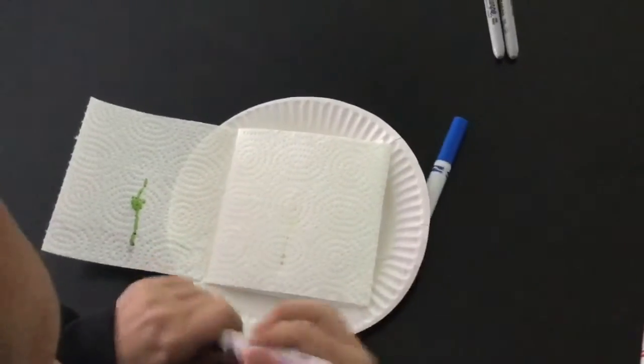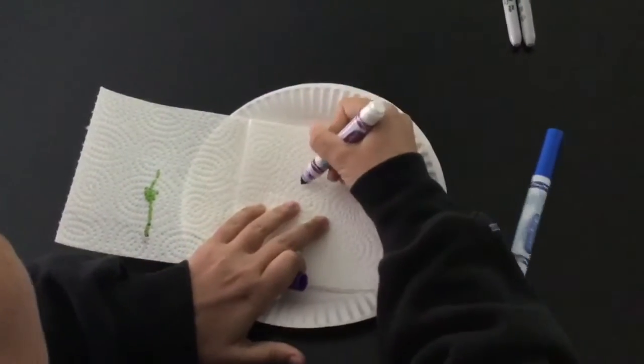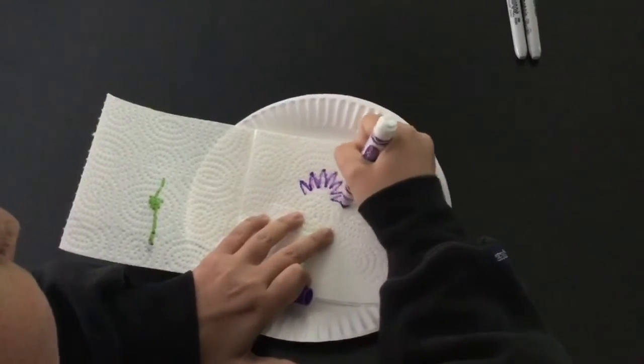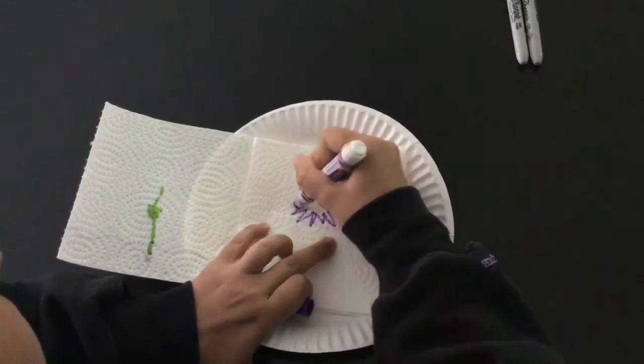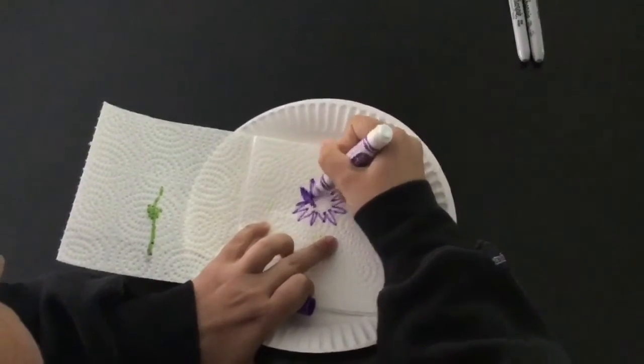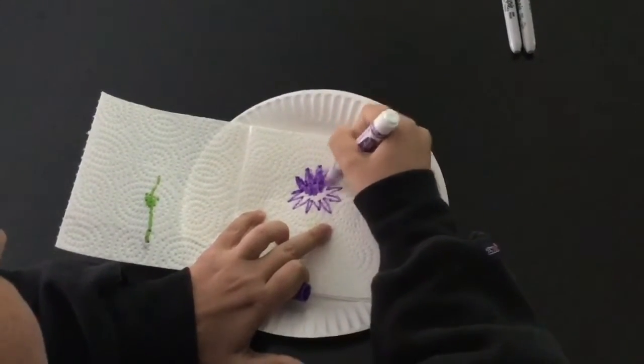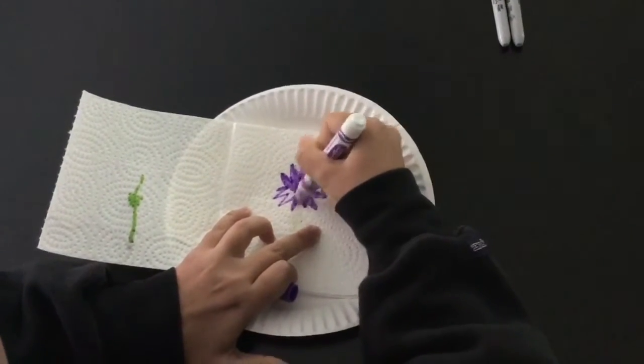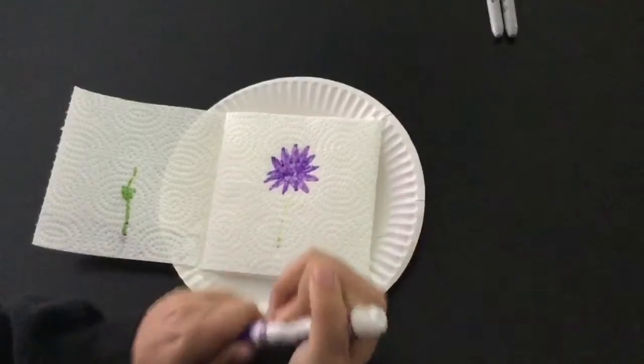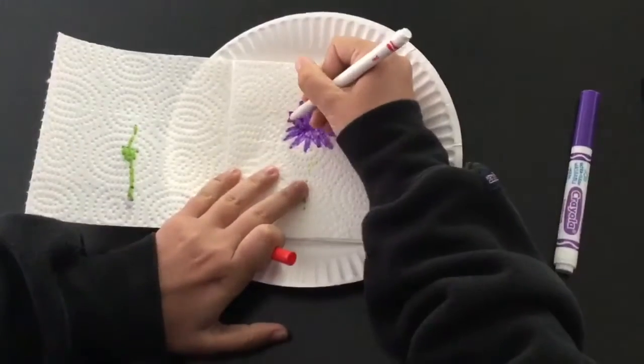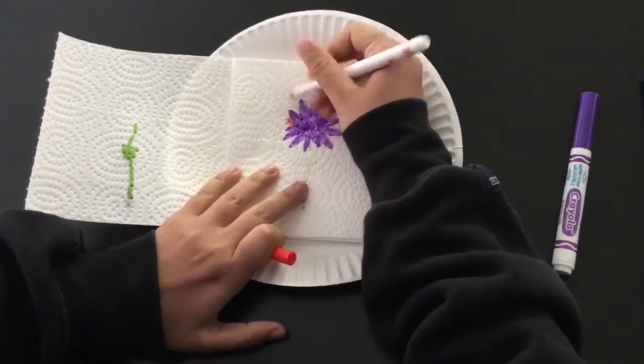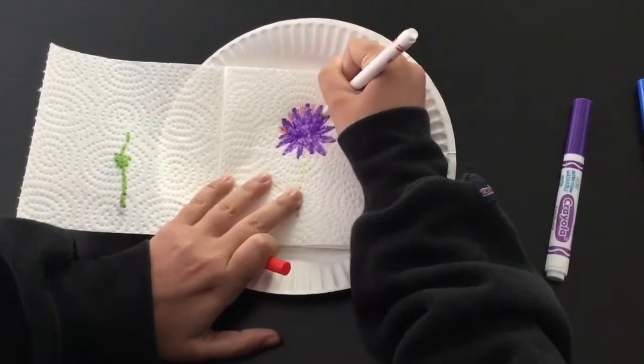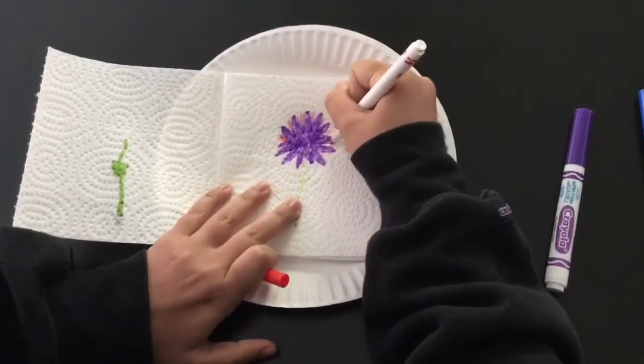Now this is where I'm going to draw my flower part. I'm going to add some red to my flower too but your flower can be whatever color you want it to be.